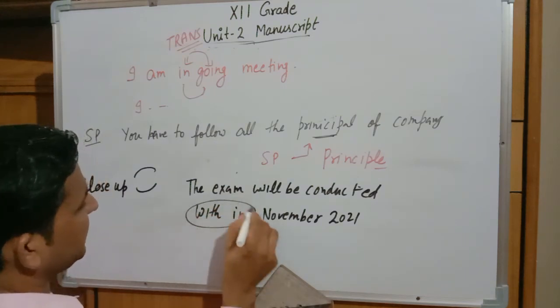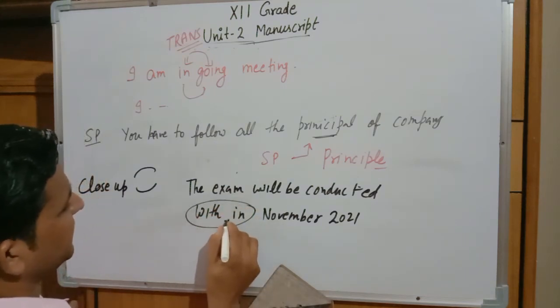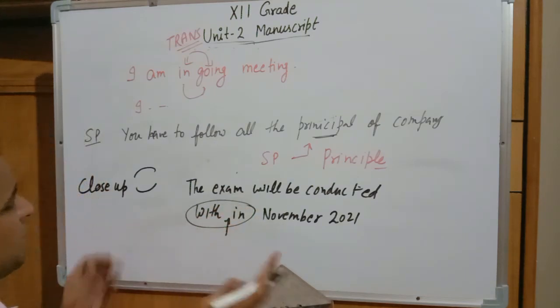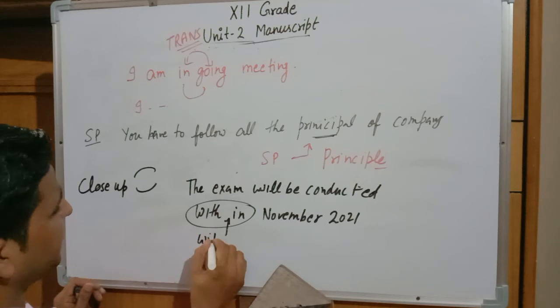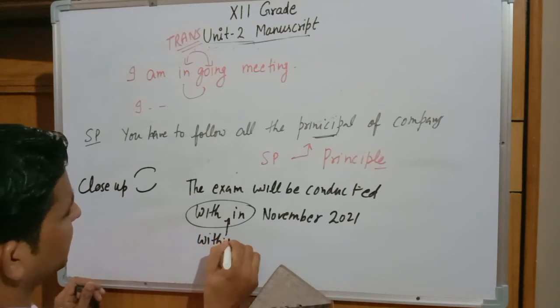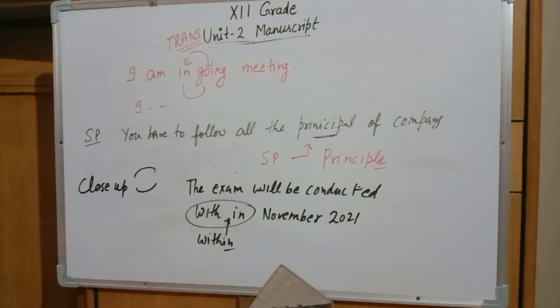Another example of Close Up: the word 'within' is written as two separate words — 'with' and 'in' — but they should be joined. Using the Close Up sign, it becomes 'within November.' This is the Close Up correction.